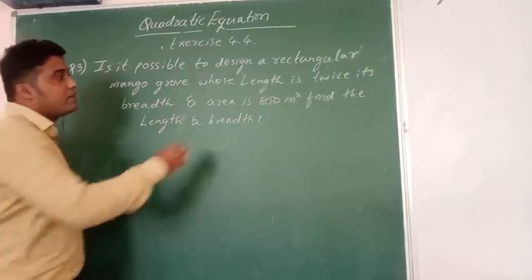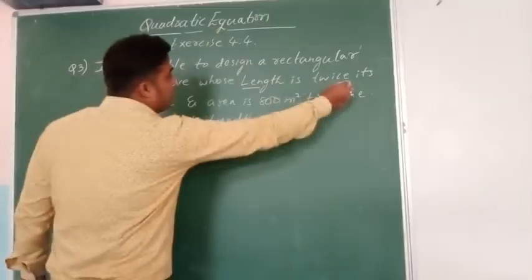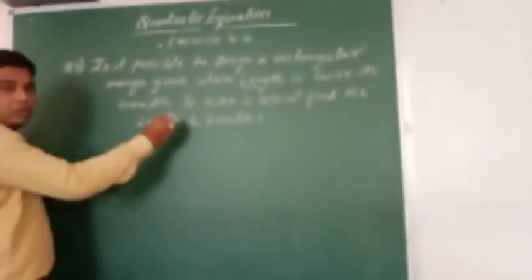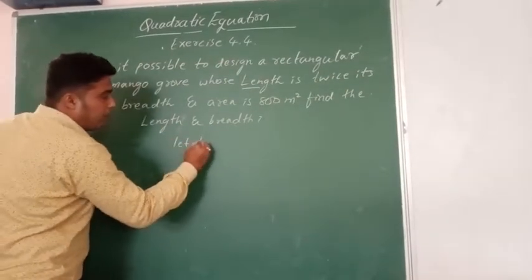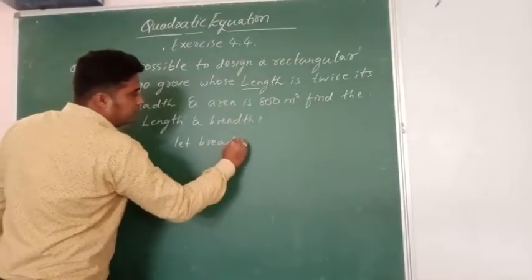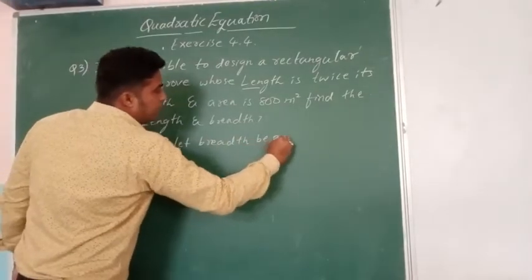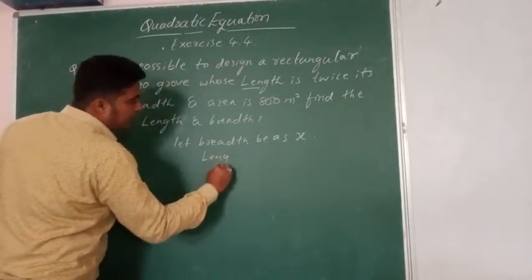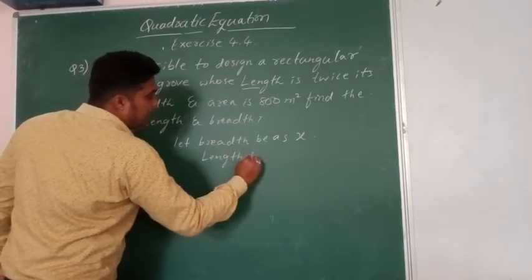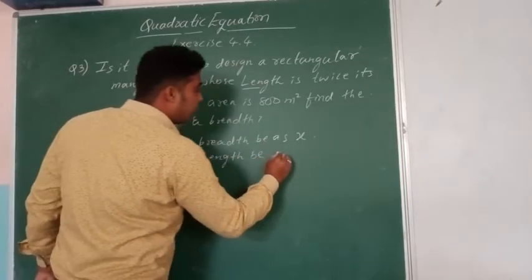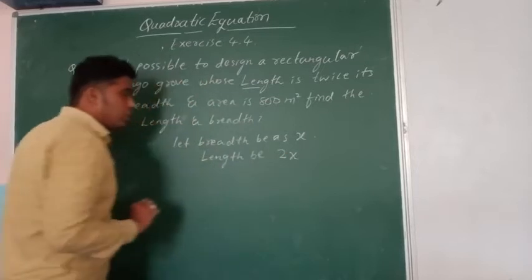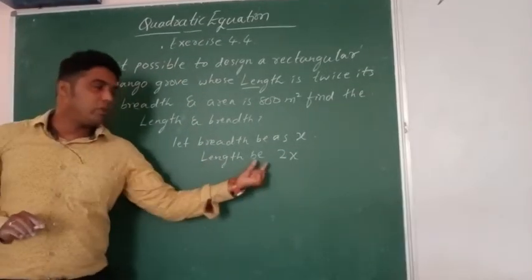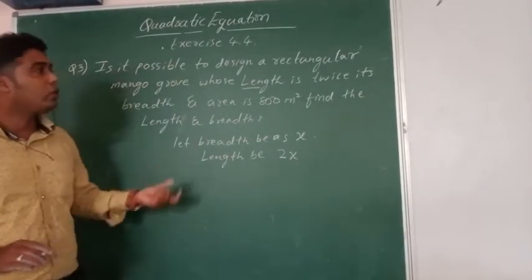So they are saying whose length is twice its breadth. So let us take the breadth to be X. Then what about the length? Length is twice the breadth means 2X. So the breadth is X, then the length will become 2X.